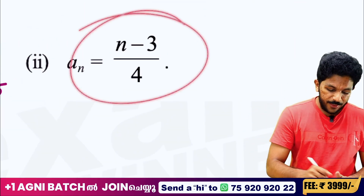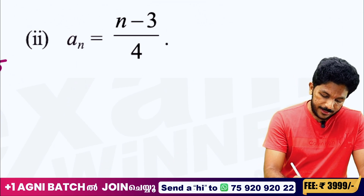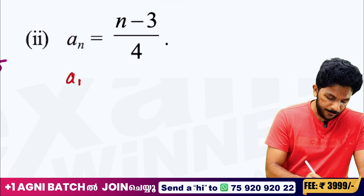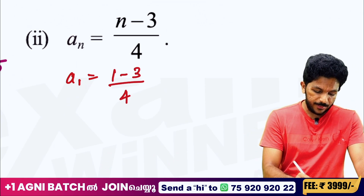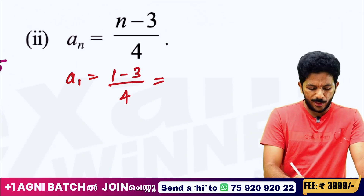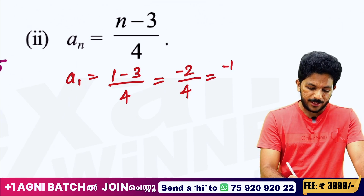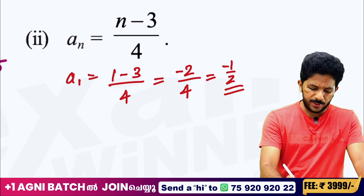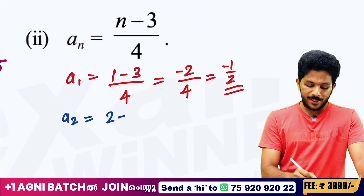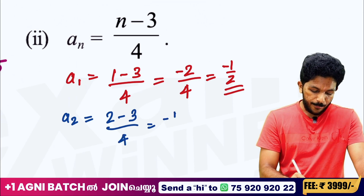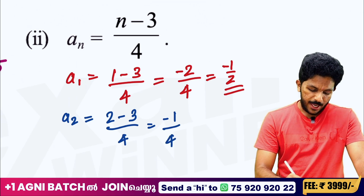How many terms are there? Very simple. A1 is equal to 1 minus 3 divided by 4. Then we do the math: 1 minus 3 is equal to minus 2, divided by 4. That gives minus 1 by 2. A2 is equal to 2 minus 3 by 4, so minus 1 by 4. That's right.